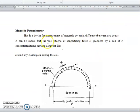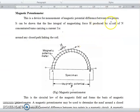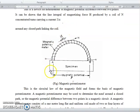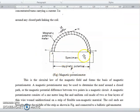Magnetic Potentiometer: This is a device for measurement of magnetic potential difference between two points. It can be shown that the line integral of magnetizing force H produced by a coil N of concentrated turns carrying a current I.